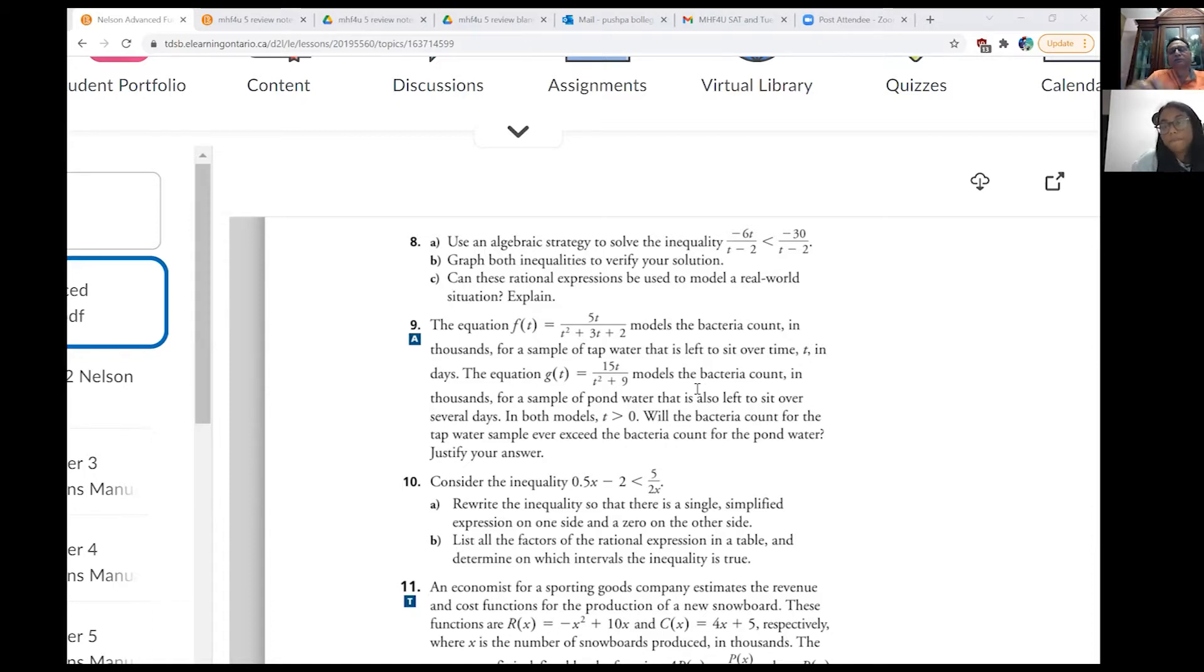Correct. So it's an inequality which you have to solve. So we are given two functions. We're saying first function f(t) models bacteria count in thousands. Remember that. Both are in thousands. For a sample of tap water. And g(t) is bacteria count in pond water. The question is, will bacteria count for the tap water sample ever exceed? So we basically want to solve this equation. Is that clear to you? Yeah. Because the tap water is f(t). So that's the inequality which you need to solve.